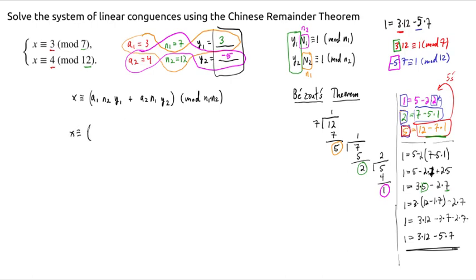plus 4 times 7 times negative 5. And that's all reduced modulo the product of these two is 84. So mod 84.